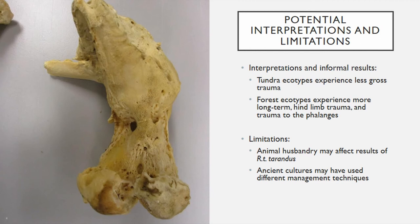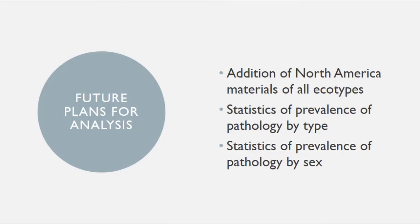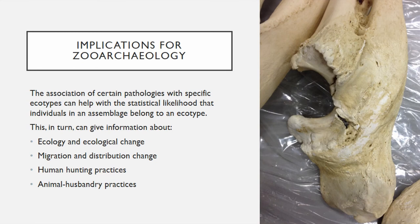Barren ground and arctic animals are more likely, however, to have a cause of death listed simply as two words: polar bear. After completing the analysis of the North American samples according to this rubric, my research plans to analyze gross trauma by type, anatomical location, and injury duration. I also plan to analyze the prevalence of major pathologies according to sex. The associations of certain pathologies with specific ecotypes can help us — not definitively define an ecotype in an archaeological assemblage — but the percentage of long-term trauma may give us a clue as to what percentage of an assemblage is forest reindeer, especially given the great divide in pathologies between forest and tundra reindeer. This in turn can give us information about ecology, migration, human hunting, and animal husbandry practices.